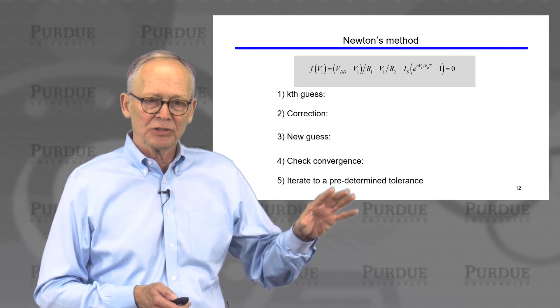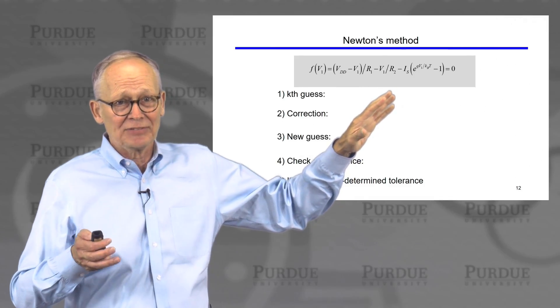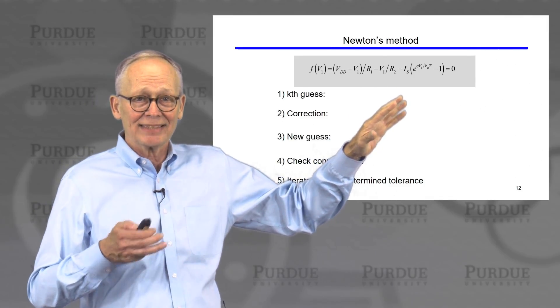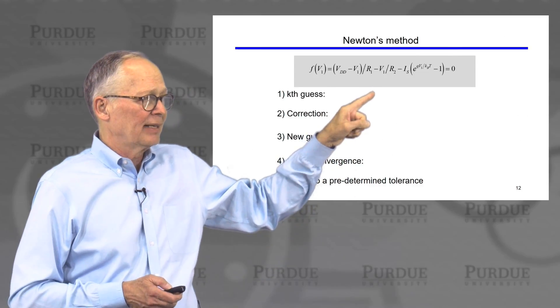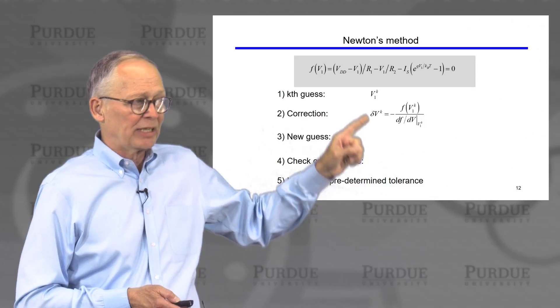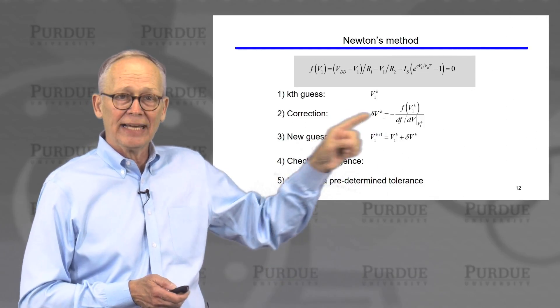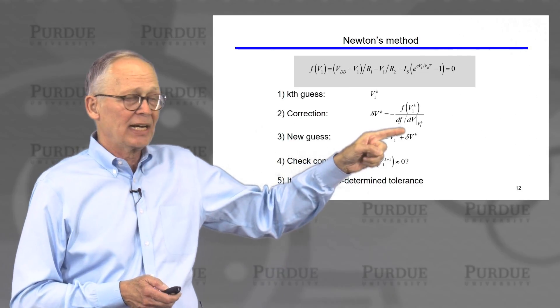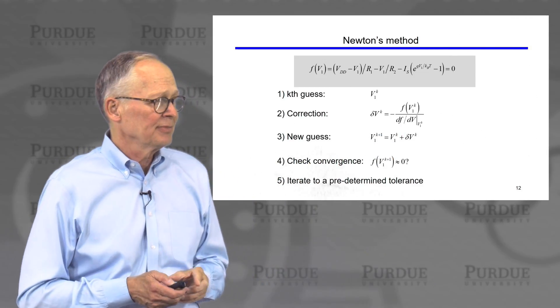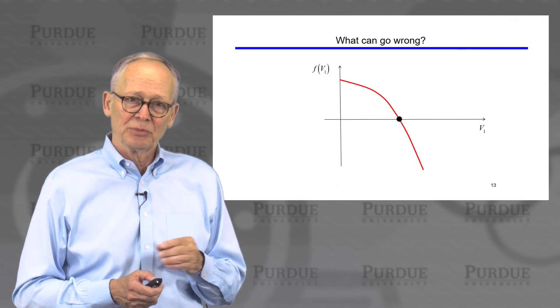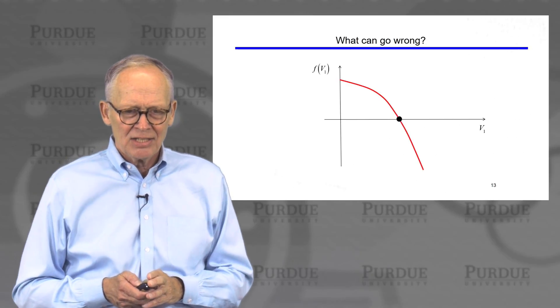To review Newton's method: we have a nonlinear equation. In a complicated circuit, we'd have a system of nonlinear equations, but the same ideas apply. We make a guess, the kth guess. We compute a correction to the kth guess. We have an improved guess for the solution. We check to see whether we're close enough to satisfying the circuit equations. If we aren't, we just continue until we reach a predetermined tolerance.